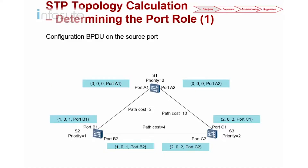Let's look into this topology. As you can see, I have three switches: Switch 1, Switch 2, and Switch 3. Switch 1 has a priority of 0, Switch 2 has a priority of 1, and Switch 3 has a priority of 2. The path cost between Switch 1 and Switch 2 is 5, between Switch 2 and Switch 3 is 4, and between Switch 1 and Switch 3 is 10.